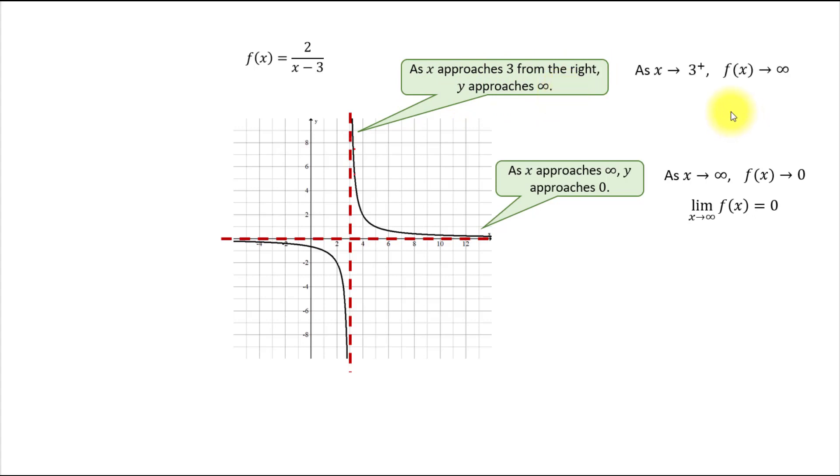And here's the mathematical notation for that. Please note how we indicated that x approaches three from the right. We place the plus. And here's the corresponding limit notation. Limit of f of x as x approaches three from the right equals positive infinity.